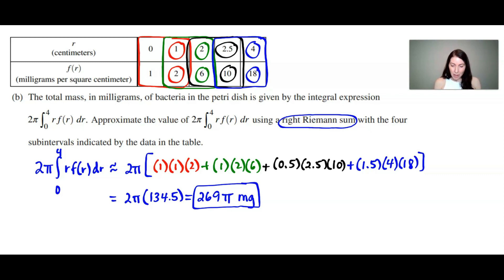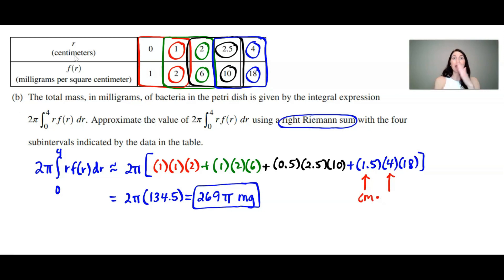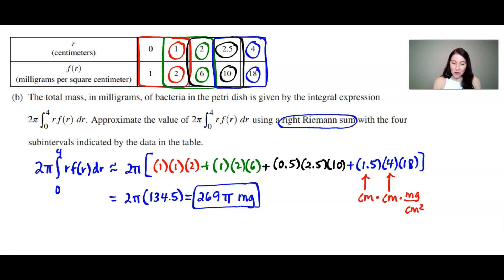As for why the unit is milligrams: the first value in each rectangle product was r in centimeters, the second value was the right-endpoint r also in centimeters, and f(r) was in milligrams per square centimeter. The centimeters squared in the numerator cancel with the centimeters squared in the denominator, so the final unit ends up being milligrams.